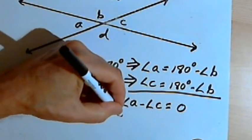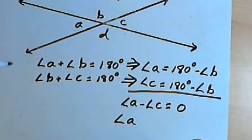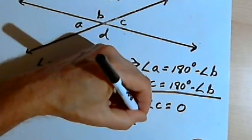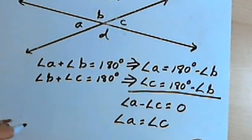Let's just add angle C to both sides. And I'll get angle A equals angle C, which is what we set out to prove.